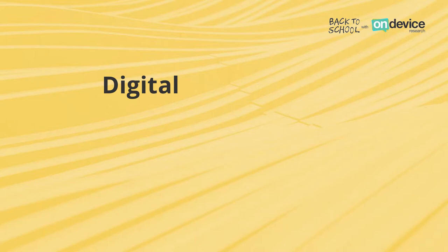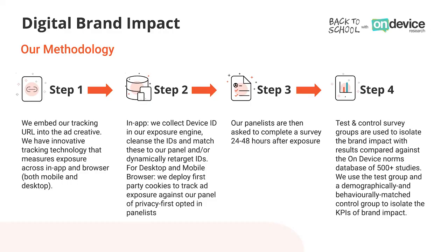This works whether the ad is on digital out-of-home, social media, or audio ads. Once you've tracked an exposure through your tracking technology, that exposure is then matched against a research panel. Equally, you form a balanced control group — people on that research panel who you know haven't been exposed.